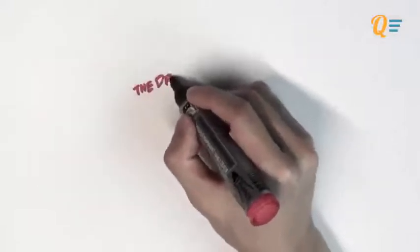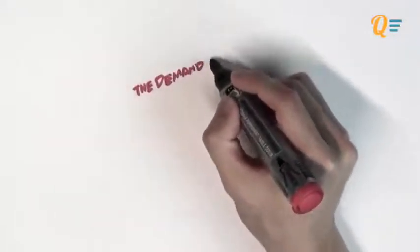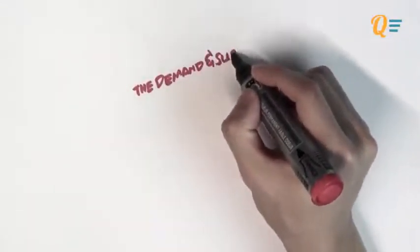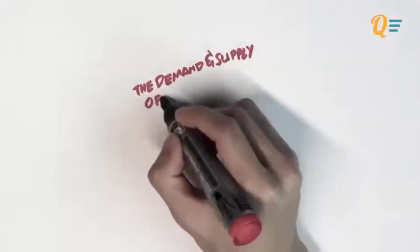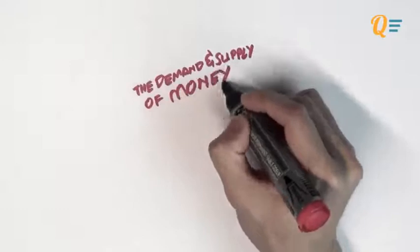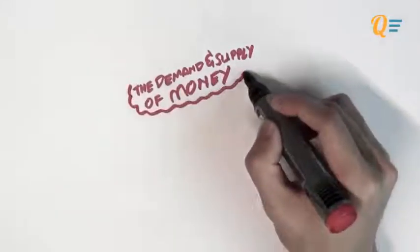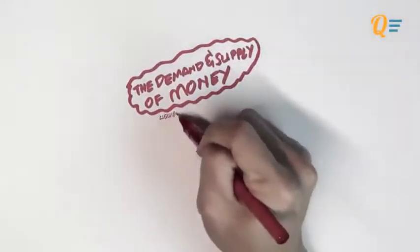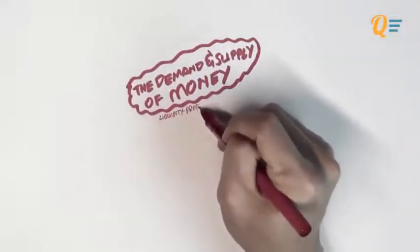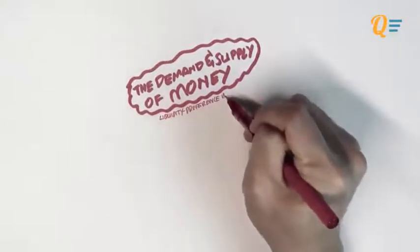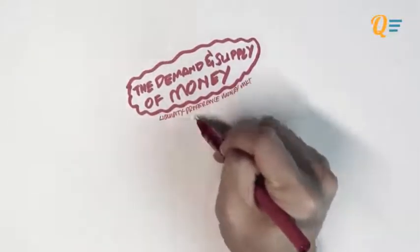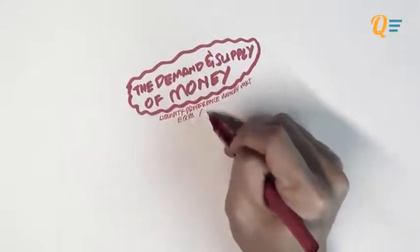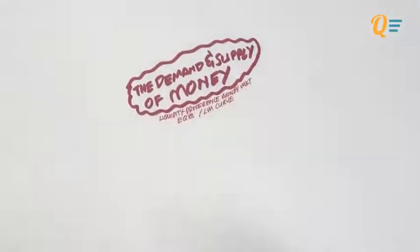Welcome to a new chapter in macroeconomics. We will be talking about everybody's favorite topic: the demand and supply of money. This topic is going to help you understand liquidity preference and money market equilibrium, which is also known as the LM curve.